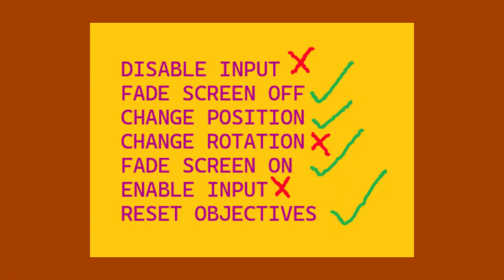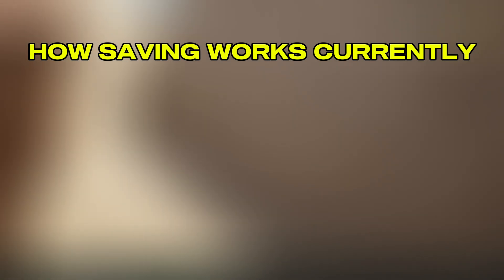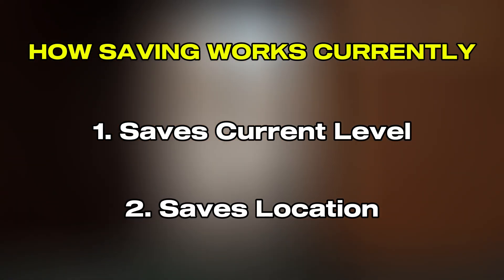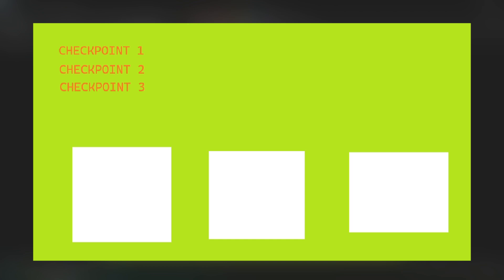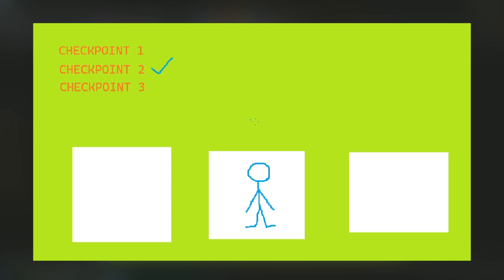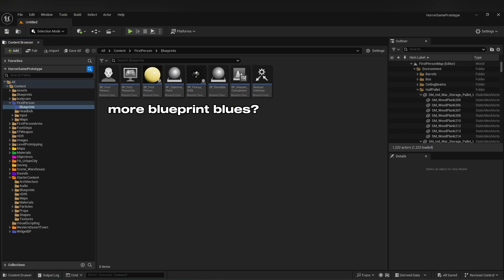There are definitely some issues here. My input never gets disabled, my rotation doesn't change, and my body cam overlay doesn't fade in with the screen. But there's an even bigger issue I didn't consider: I think I want my game to use a checkpoint system as well as autosaves. Currently it saves the level and position, but I need a system where if the player passes through a certain area, the game saves a checkpoint — and if you save the game, it loads whatever the last checkpoint was as your saving position.